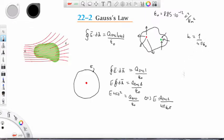So if we plug this in we get k times q enclosed over r squared. Which is the familiar result from chapter 21 for the electric field of a point charge.